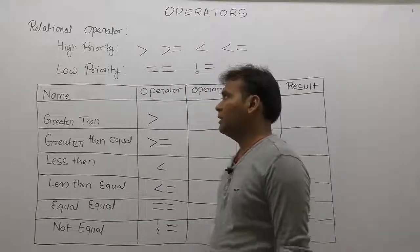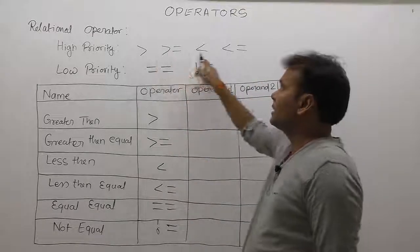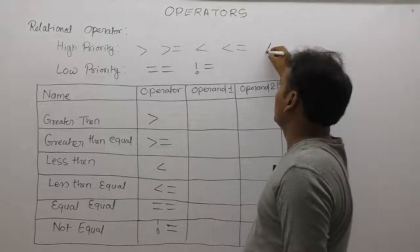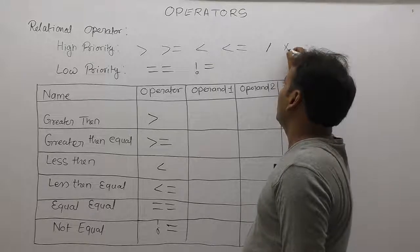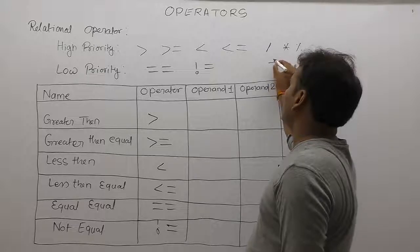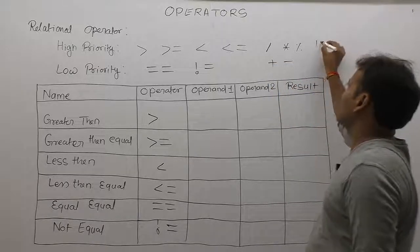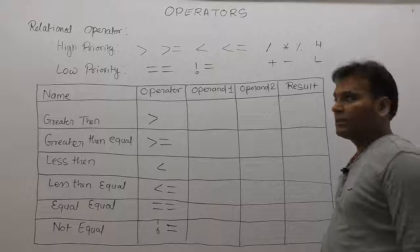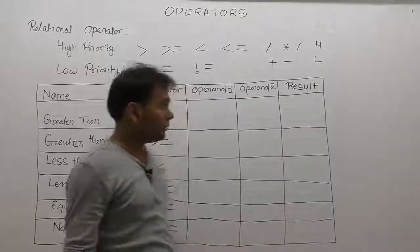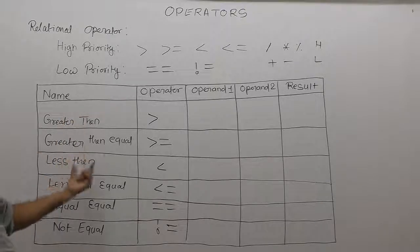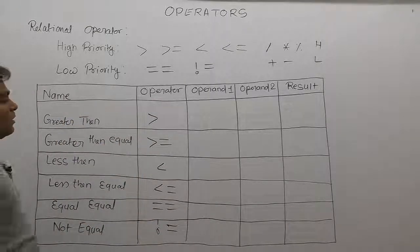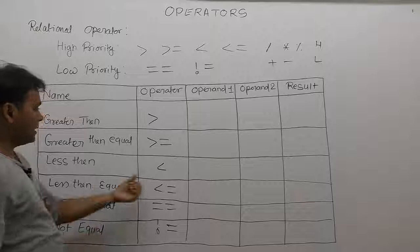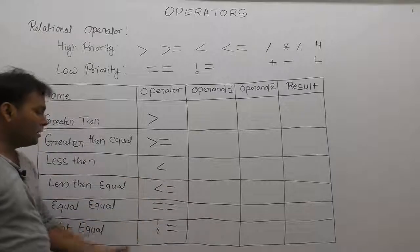These relational operators have a similar priority structure to arithmetic operators. In arithmetic, division, multiply, and modulo have the same priority, as do plus and minus, but arithmetic division/multiply/modulo have highest priority. The list of relational operators with names and symbols: greater than, greater than or equal to, less than, less than or equal to, equal equal, and not equal — total six relational operators.